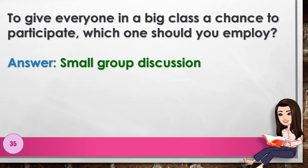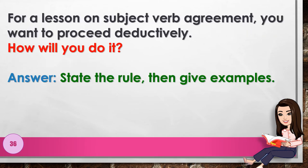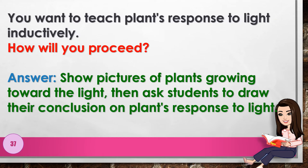Number 35: To give everyone in a big class a chance to participate, which one should you employ? Answer: small group discussion. Number 36: For a lesson on subject-verb agreement, you want to proceed deductively. How will you do it? Answer: state the rule then give examples. Number 37: You want to teach plants' response to light inductively. How will you proceed?